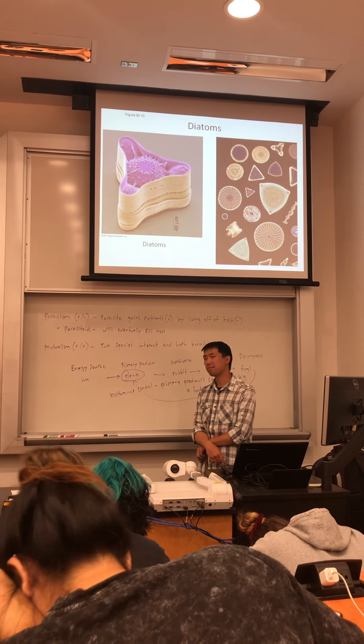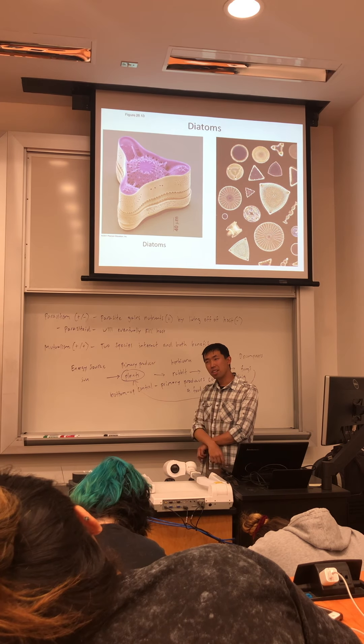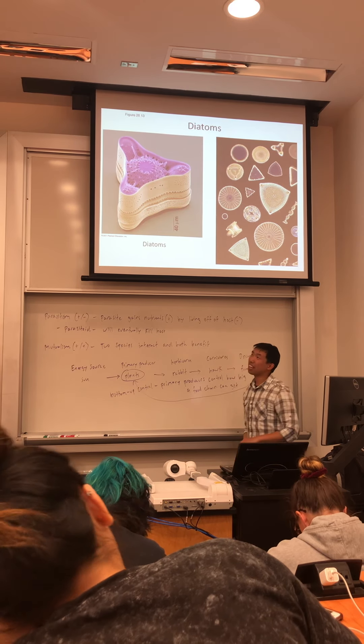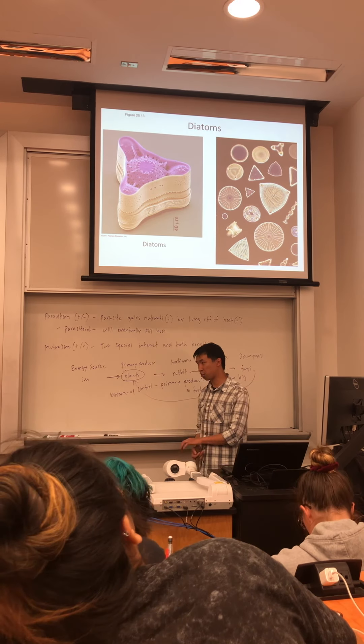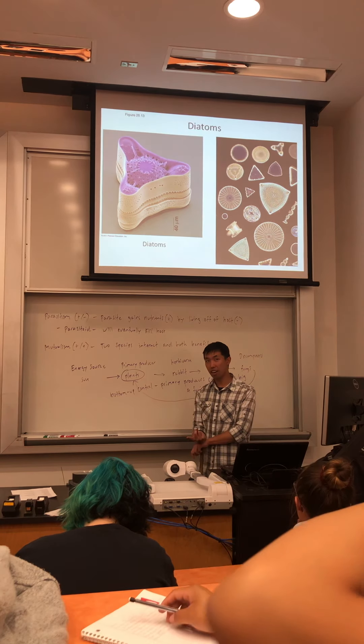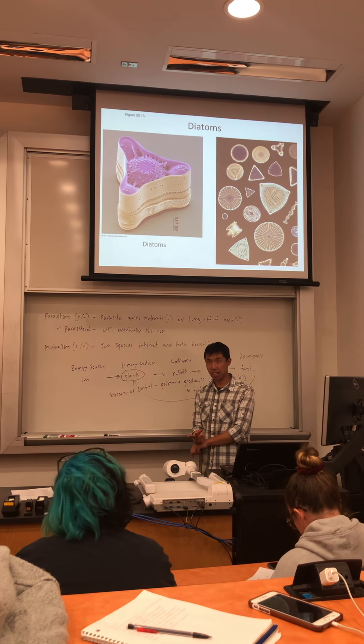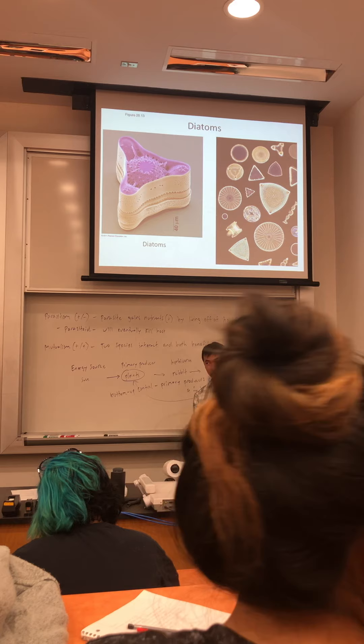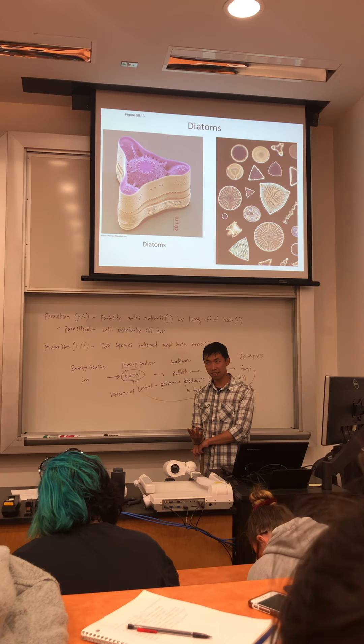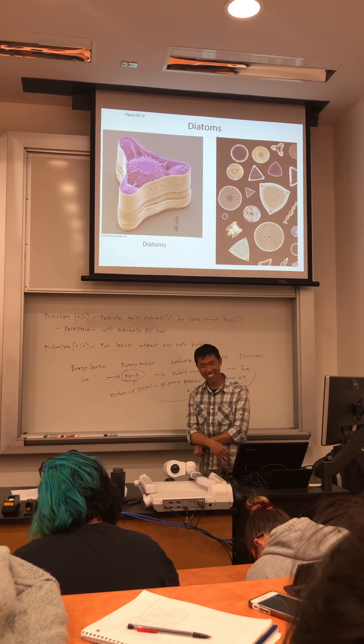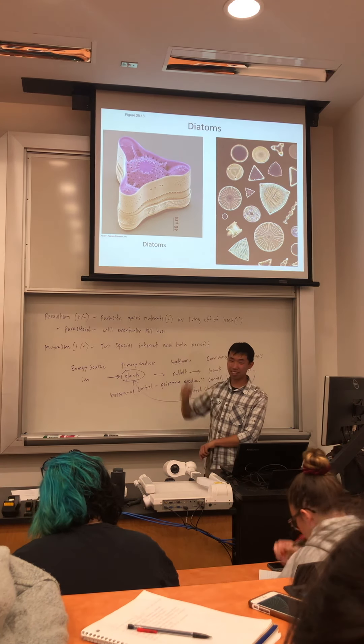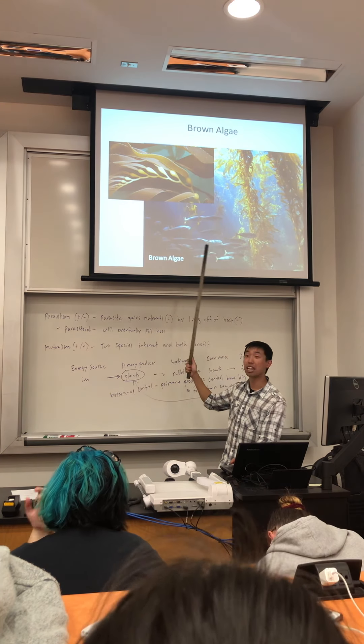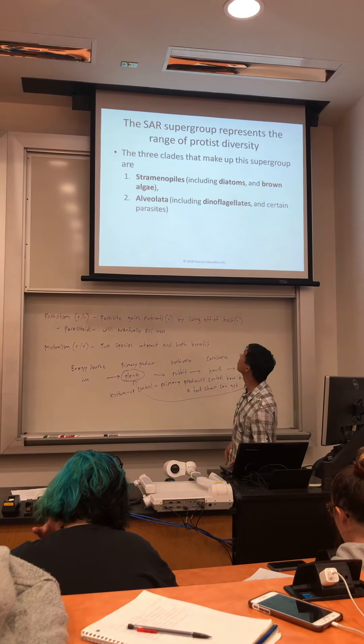A diatom would be a protist. A question I could ask is which of the following is true for all protists: A, they are all unicellular; B, they are all heterotrophic; C, they are all eukaryotes. The point is, they are eukaryotes. Keep in mind, there are multicellular protists like the brown algae. That's a common misconception that protists are unicellular. That's not true. There are multicellular protists.